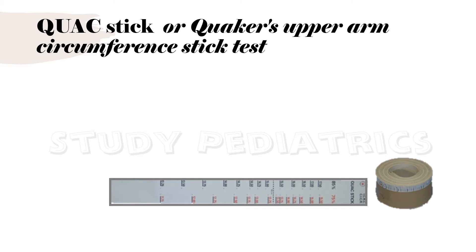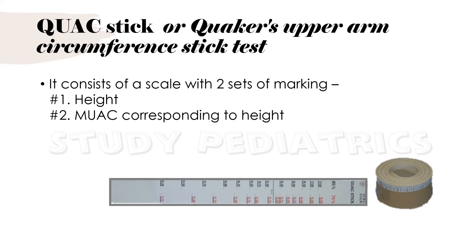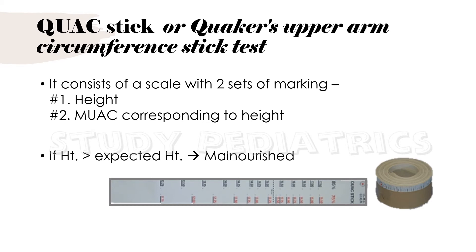The Quack stick test, or Quacker's upper arm circumference stick test, consists of a scale with two sets of markings: height and MUAC corresponding to height. Here, height refers to the length of the arm from the shoulder tip to the elbow. We compare this arm height with MUAC. If the MUAC is more than the expected value for the height, it indicates malnourishment.